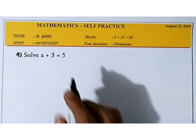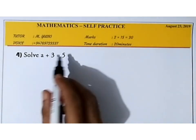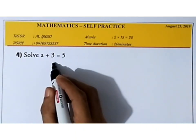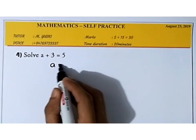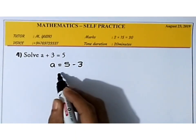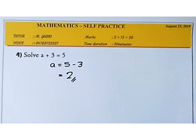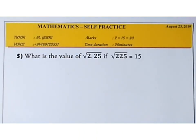For a + 3 = 5: taking 3 to the right side gives minus 3, so 5 minus 3 equals 2. The answer is a = 2.